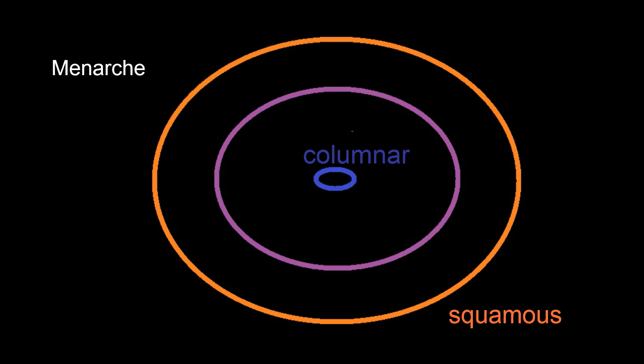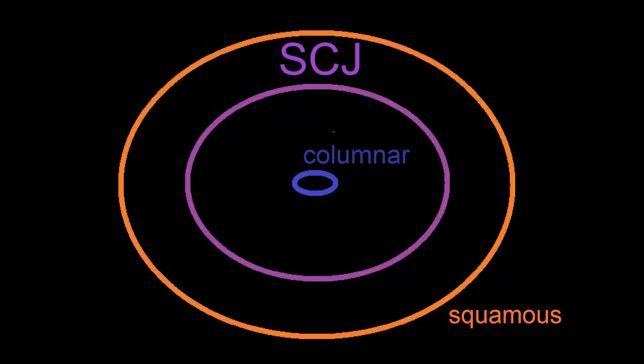During menarche, there is an estrogen surge that causes the cervix to mushroom and drag the glandular or columnar epithelium of the endocervix onto the vaginal exposed portion of the cervix. Thus, the SCJ at menarche will be at or close to the vaginal part of the external os. As the woman ages, the SCJ recedes up the endocervical canal.